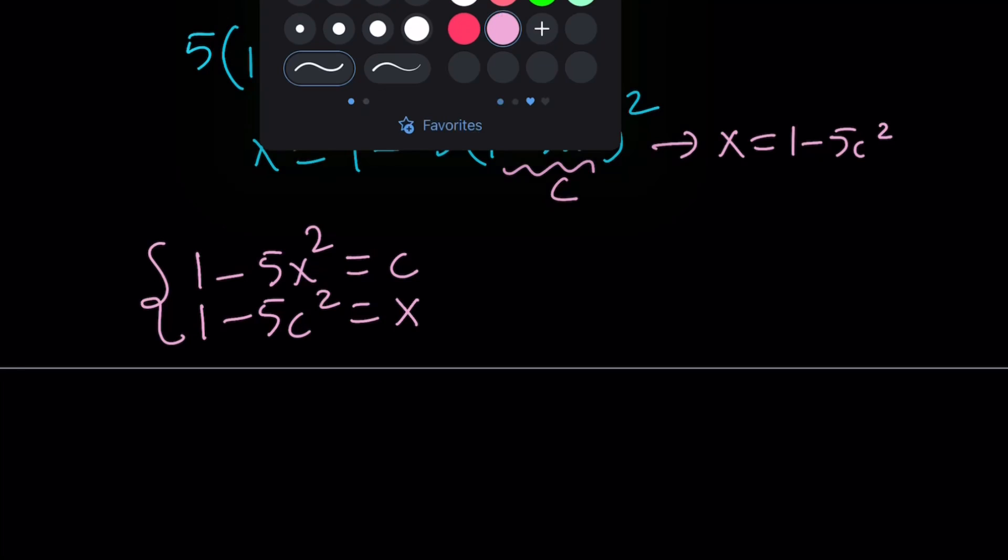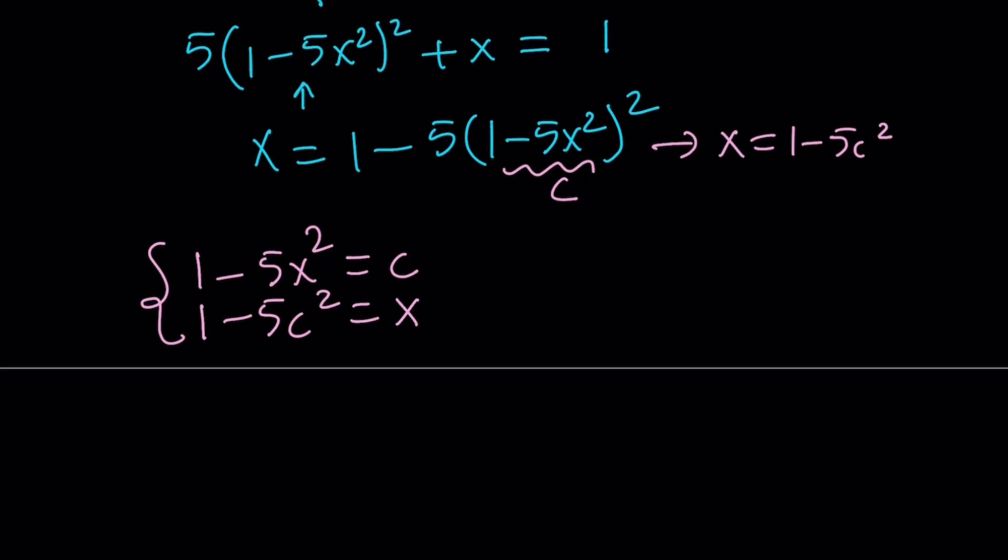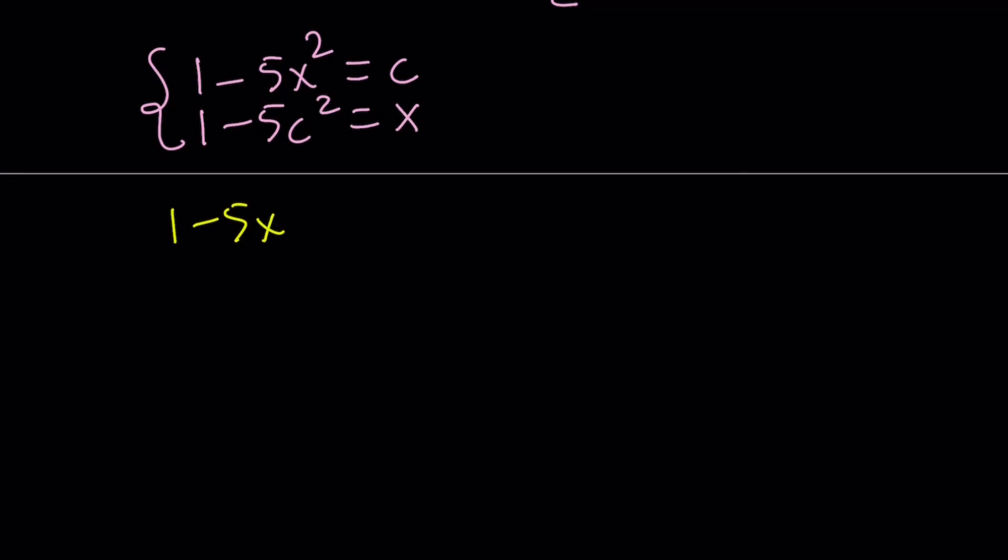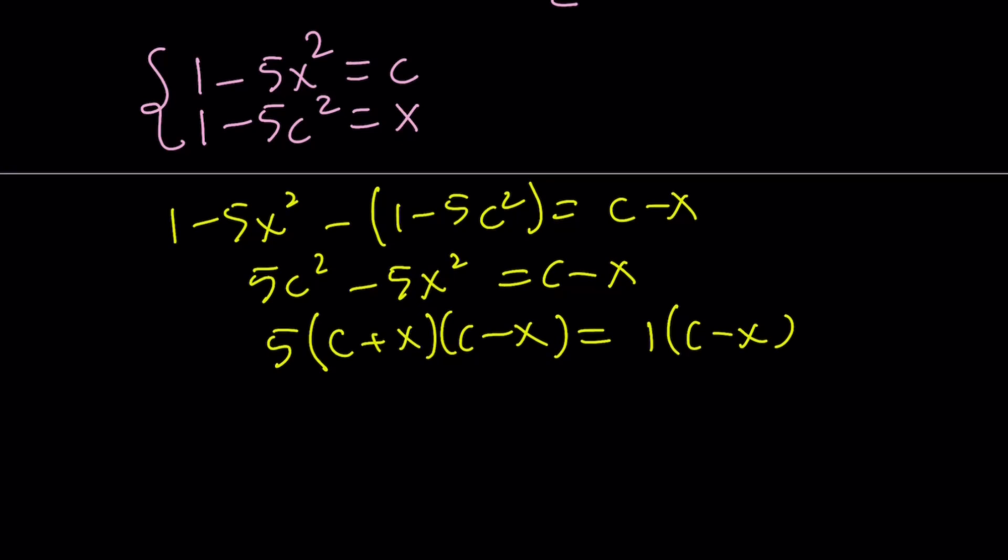I'm going to stop and get on with the solution. We're going to subtract here: 1 minus 5x squared minus 1 minus 5c squared equals c minus x. Then 1 cancels out, and we get 5c squared minus 5x squared equals c minus x. Then I take out a 5 and get c squared minus x squared, which is the difference of two squares. I can factor it as c plus x times c minus x. And I have 1 times c minus x. I can put the c minus x on the left-hand side. That gives me 5 times c plus x minus 1 equals 0.